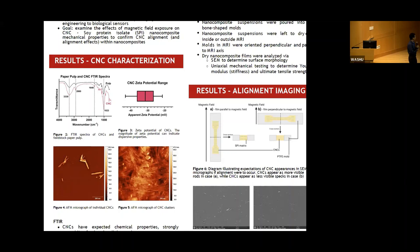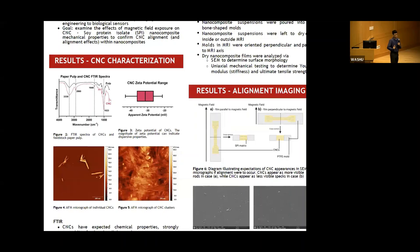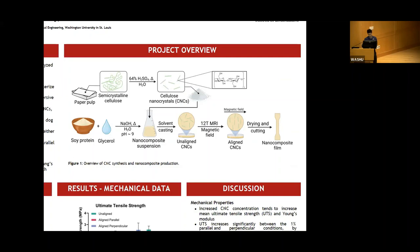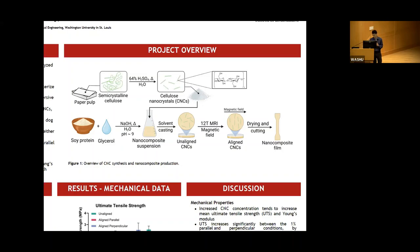The rod-like shape means they'll have differing effects when aligned versus something spherical. With the cellulose nanocrystals verified, we moved on to nanocomposite development. We combined the cellulose nanocrystals with soy protein, glycerol, and water, mixed them together, and poured the material into molds. The nanocomposites were allowed to dry through air evaporation of water, resulting in a dry nanocomposite film.